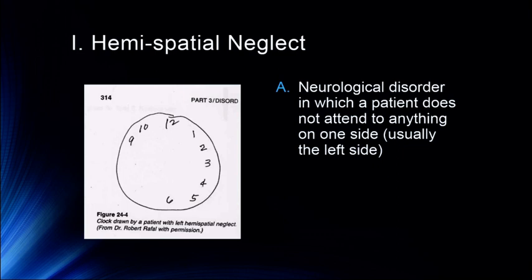This is a clock drawn by a patient with left hemispatial neglect. They're drawing this clock from memory — not copying a drawing like we would have seen in agnosia. So you can see that even in their memory or their ability to think about a clock, they've left off the left-hand side. They've drawn a circle, but that's just automatic. When they go to actually create the clock, you can see it's missing part of the left-hand side.